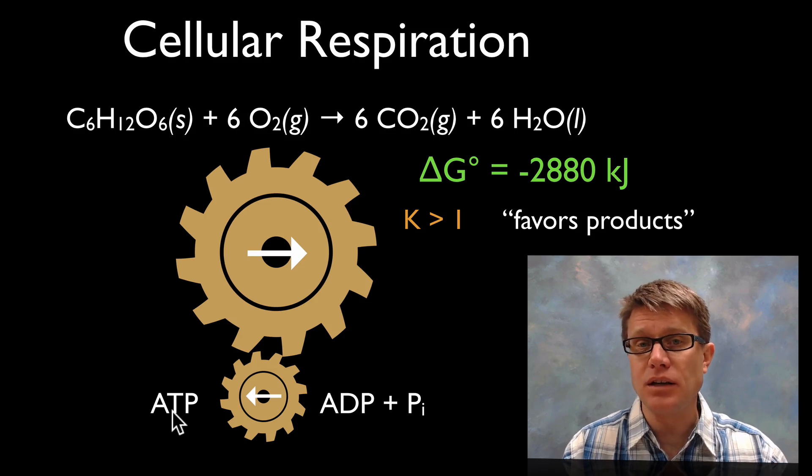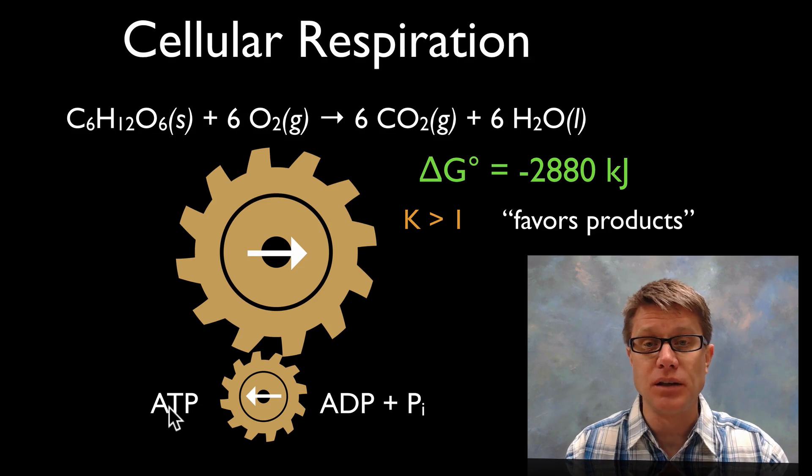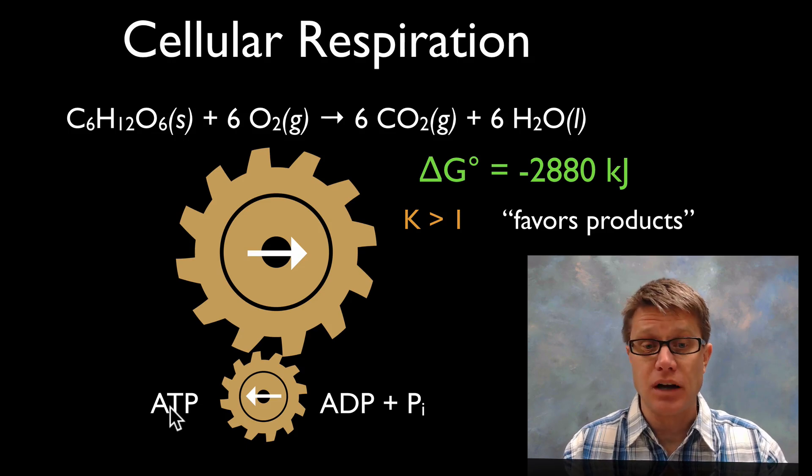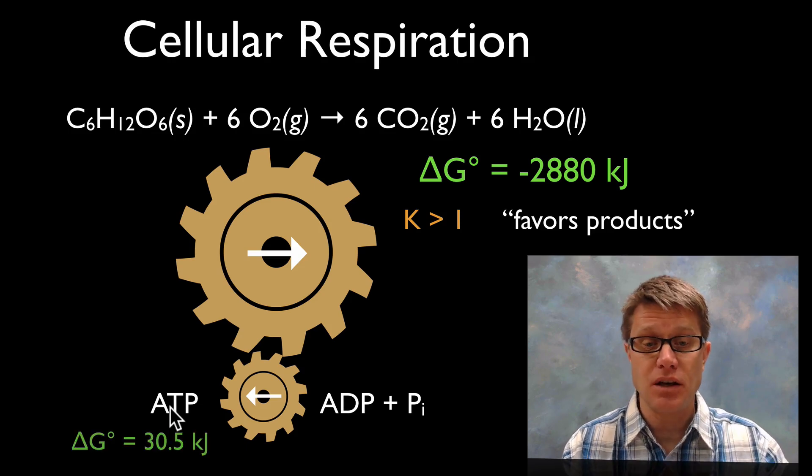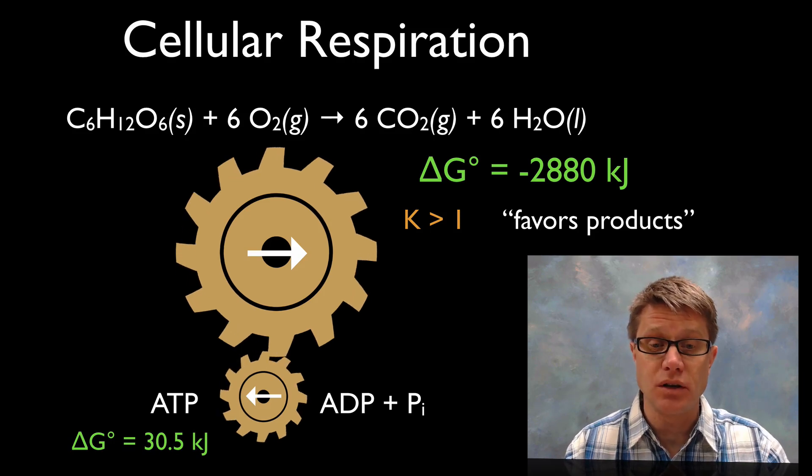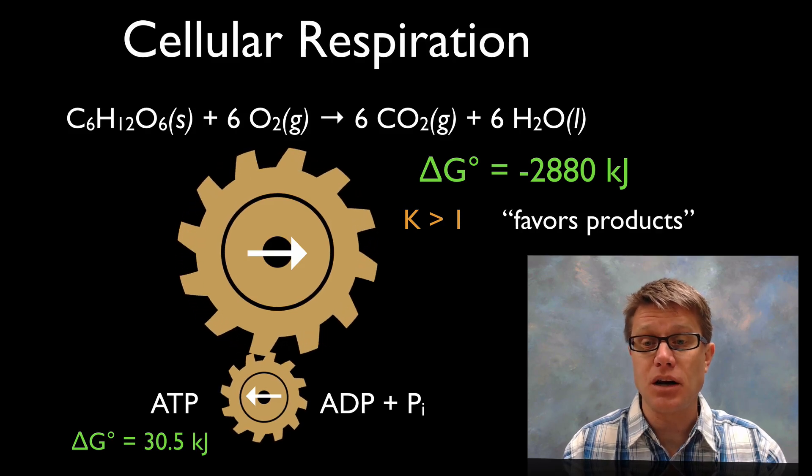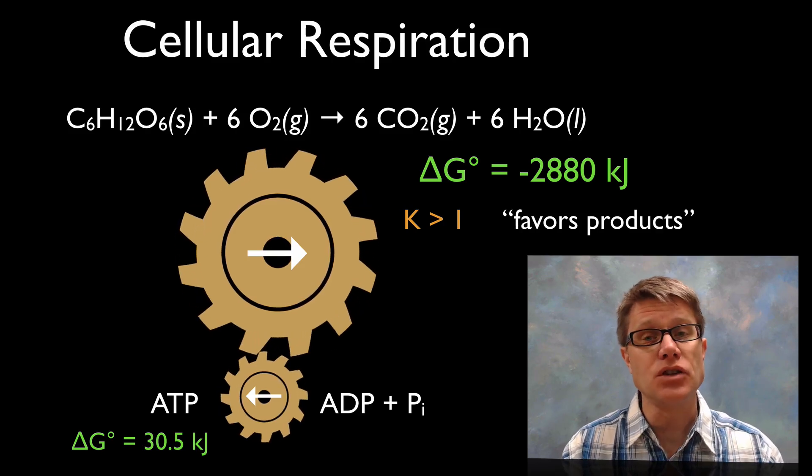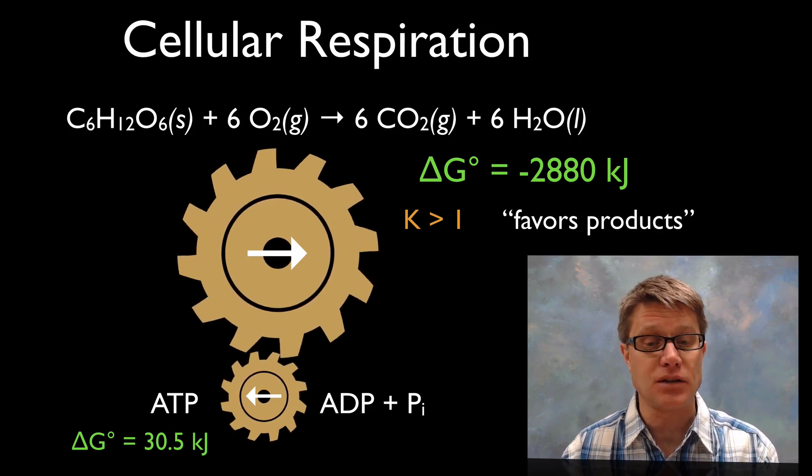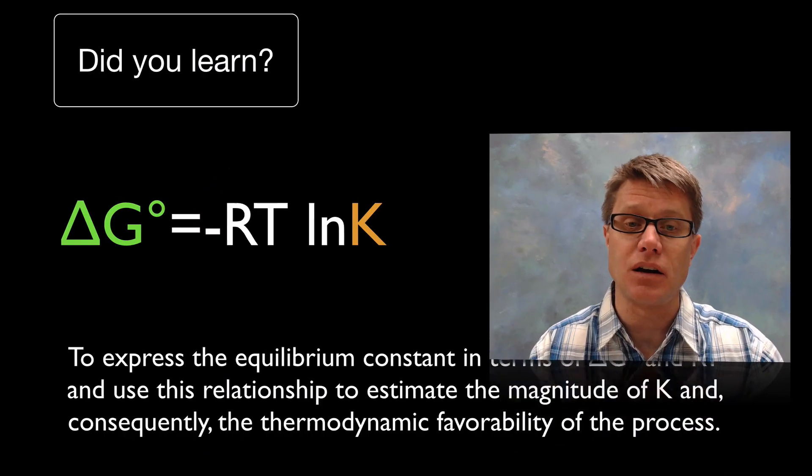And so what's going on inside our cells, more appropriately inside the mitochondria of our cells, is that we're coupling this exergonic reaction or this reaction that gives off energy with an endergonic reaction, one that consumes it. And so you could think of these as gears as we're converting that sugar into carbon dioxide and water. We're using the energy that's released in that exergonic reaction and we're tying it to an endergonic reaction.